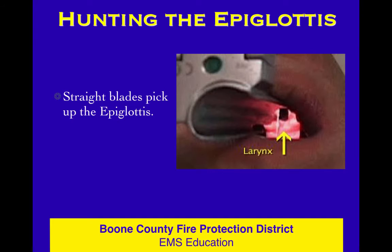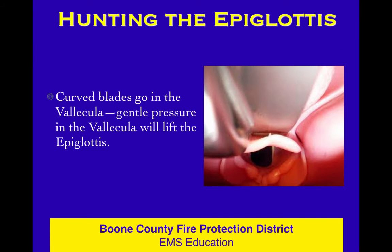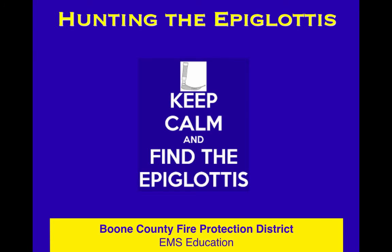Straight blades go in and directly lift the epiglottis, so obviously you'd want to find it first. The curved blade goes in the vallecula — that space at the base of the tongue just above the epiglottis — and the key is that when you press into the vallecula, the epiglottis will flip up out of the way. So the whole point of this lesson is: find the epiglottis. Once you've found the epiglottis, everything else follows from there.